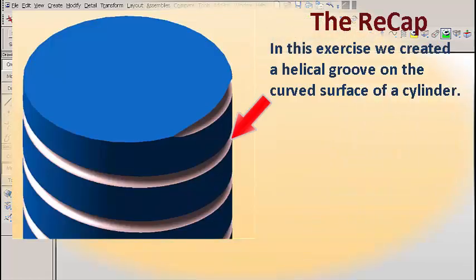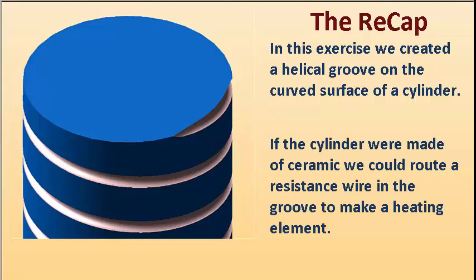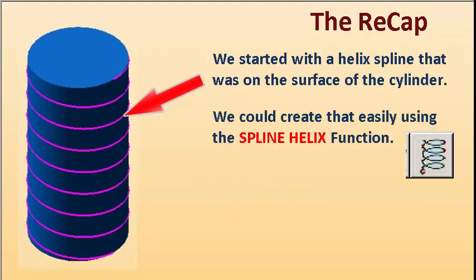So let's recap. In this exercise, we created a helical groove on the curved surface of the cylinder. If the cylinder were made of ceramic, we could put a resistance wire in the groove to make a heating element. We started with a helix spline on the surface of the cylinder, which we created easily using the spline helix function.